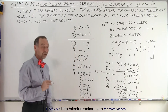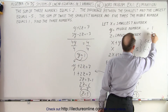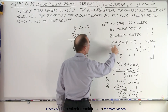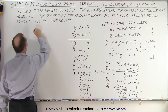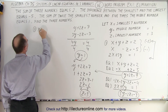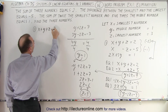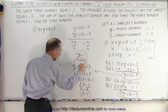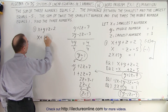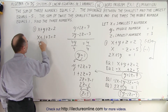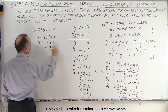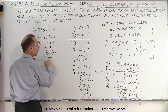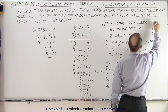Now I need to find x. I go back to equation 1: x plus y plus z equals 2. Plugging in y equals 1 and z equals 3, I get x plus 1 plus 3 equals 2, so x plus 4 equals 2, and x equals negative 2. That's the smallest number. So x equals negative 2, y equals 1, and z equals 3.